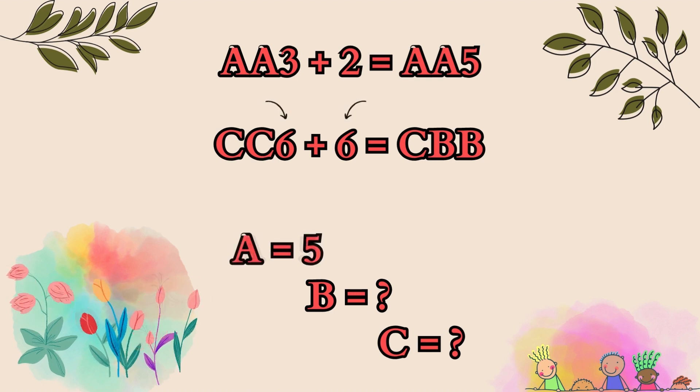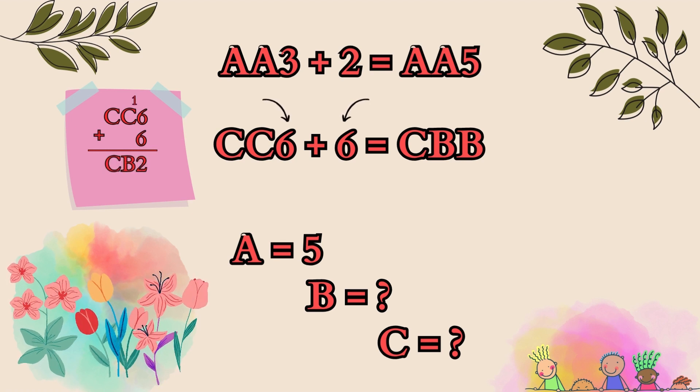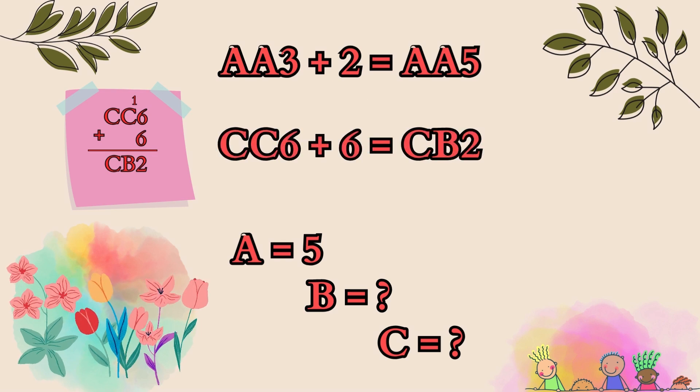Moving on to b, this one's a bit trickier but we apply the exact same method of vertical addition by adding the numbers in the ones place first. Now six plus six is twelve, but remember in vertical addition we put down the two in ones place and carry over the one to the tens place. For now we have figured out that b equals two.